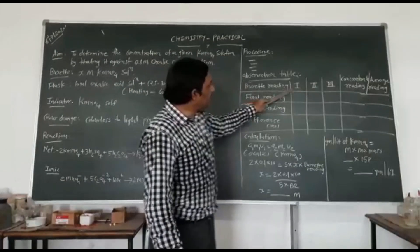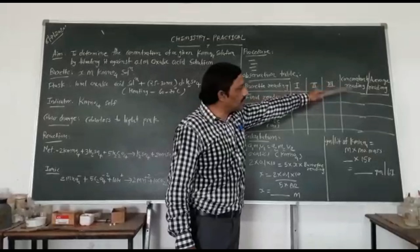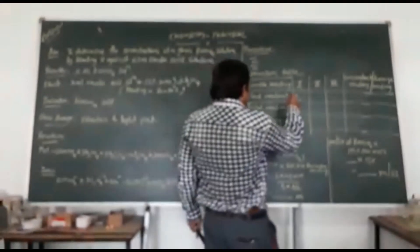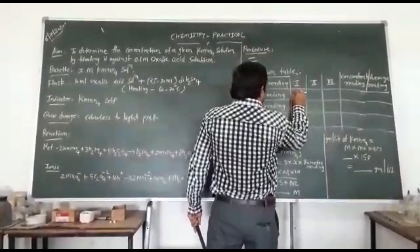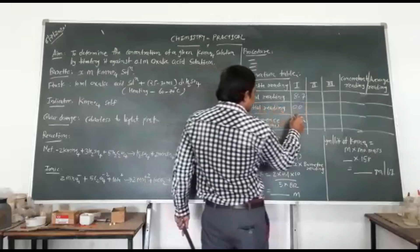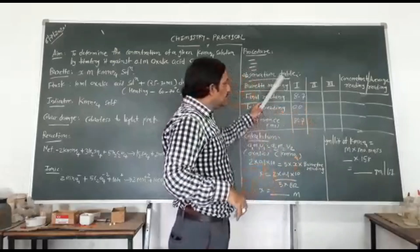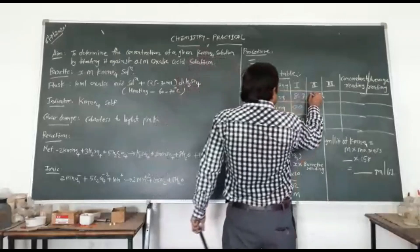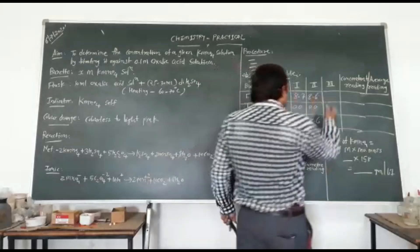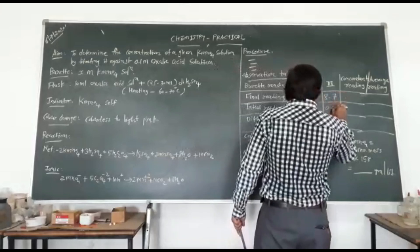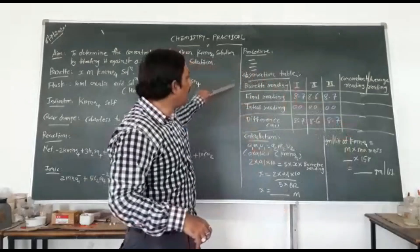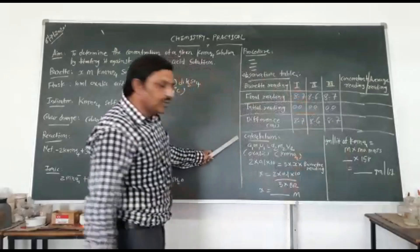In the observation table record: burette reading 1st, 2nd, and 3rd trials with concurrent readings — final reading, initial reading, and difference. The difference is 8.7 for the 1st titration, 8.6 for the 2nd titration, and 8.7 for the 3rd titration.